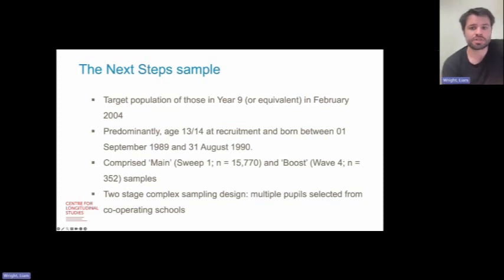Next Steps was designed to represent individuals who are in Year 9 of secondary school in England in February 2004. The study comprises two samples, a main sample of 15,770 individuals recruited in Sweep 1 and an ethnic boost sample of 352 Black African and Black Caribbean individuals who were recruited in Sweep 4.